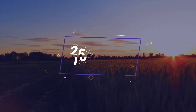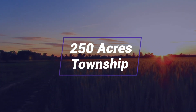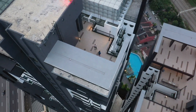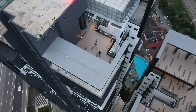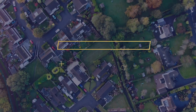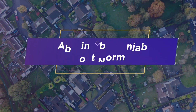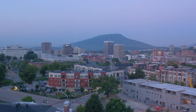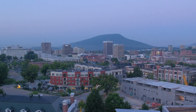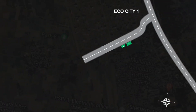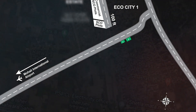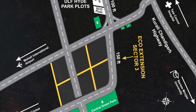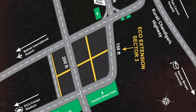Eco-Extension is a 250-acre township that boasts a self-sustainable factor catering to all real estate realms, abiding by Punjab government norms. The township exudes the essence of integrity and security. The project is connected from the north side, which is further well-connected to national highways via a 200-feet wide road.